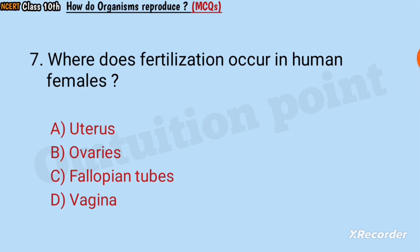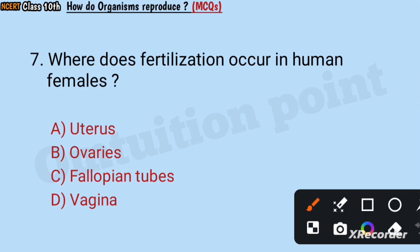Question number seven: Where does fertilization occur in human females? Uterus, ovaries, fallopian tubes, or vagina? Answer: Fallopian tubes.